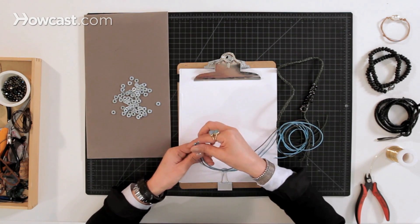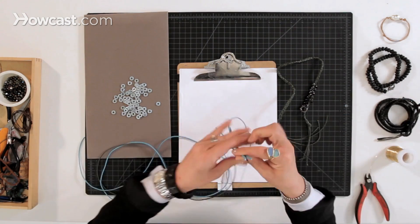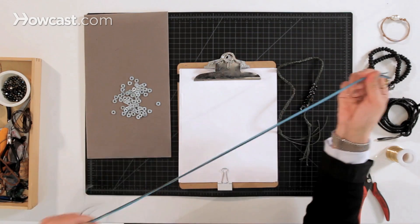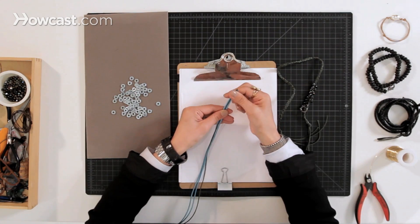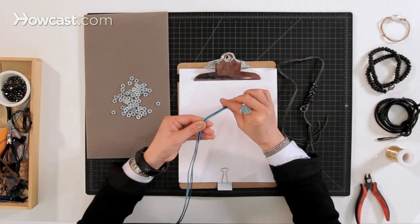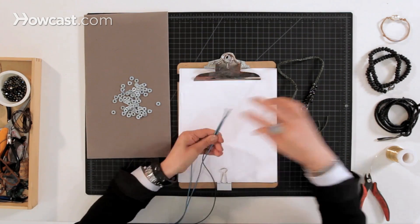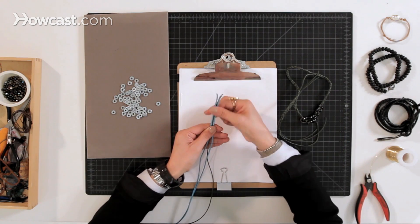So this is three pieces of one yard of any cord. So it can be waxed cotton cord which is what I'm using or it can be leather.